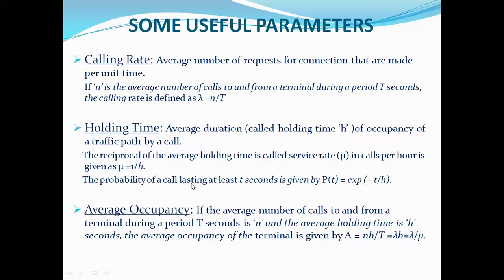The probability of a call lasting at least T seconds is given by e^(−t/h), where H is the holding time. Average occupancy: if you have N calls in time interval T, and H is the average holding time of each call, then NH/T is the average occupancy. This is traffic in Erlangs — it is NH/T, which equals lambda times H, where lambda is the birth rate.